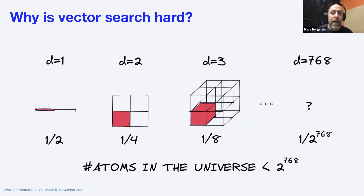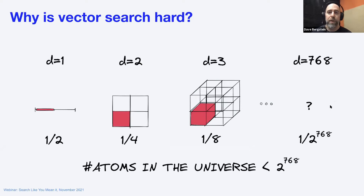This is hard. Consider just one dimension divided into two — then two or three dimensions — and then 768 dimensions as in the case of BERT. Even if you just divided every one of those dimensions into two parts, you'd already have more parts than atoms in the universe. Thinking about geometry in this many dimensions is a really hard problem. Thankfully, there are great algorithms, and it's a fast-moving space. Our founder Edo gave a great talk at CMU on the details of these algorithms and the current state of the research into how you efficiently search across 768 dimensions.